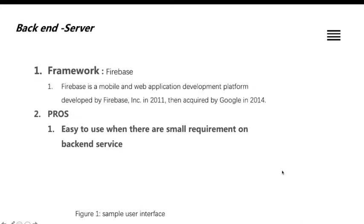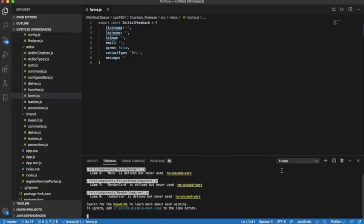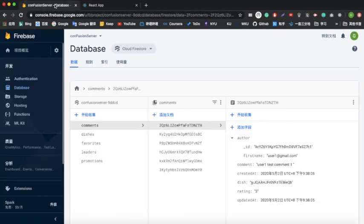For the backend, we decided to change our backend servers to Firebase. Previously the team was using the Spring framework, but since none of our current teammates know Spring, I changed the backend server to Firebase. Firebase is a mobile and web application development platform developed by Google. This framework helps you design a website with low requirements on backend server setup and is very easy to use when you don't need heavy backend customization.